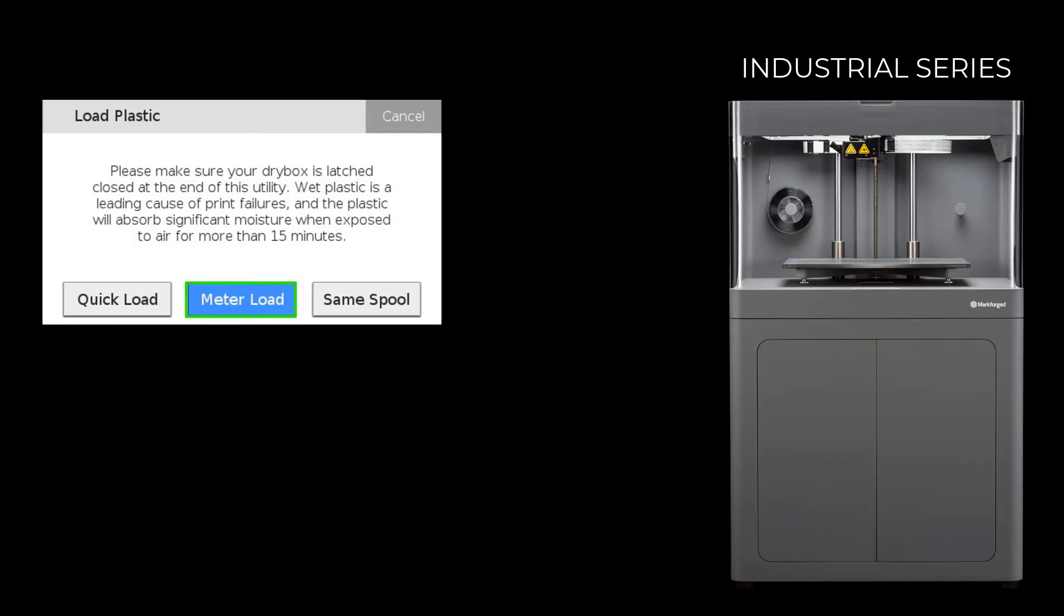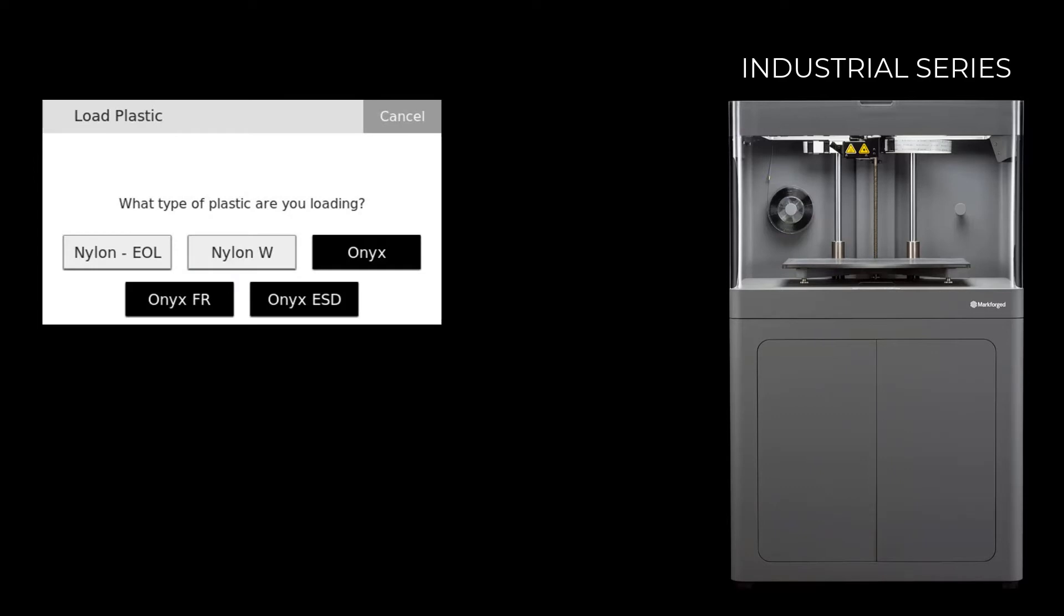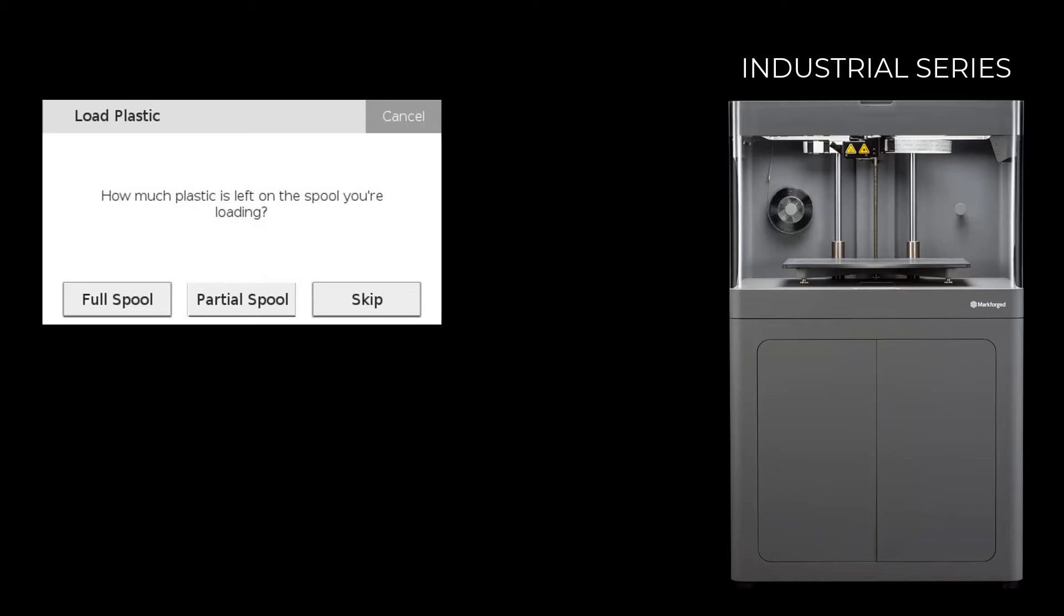Select meter load on the printer's touch screen. Select the type of plastic that you are loading into your printer. Select the type of spool that you are loading.